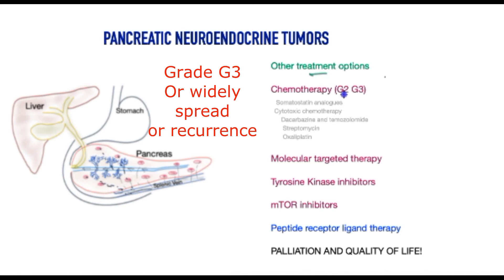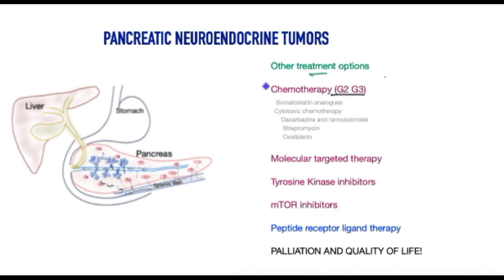For patients with highly malignant grade 3 tumours, other means of controlling the disease are required, such as chemotherapy. This is a highly complex and evolving field. These patients may benefit from a combination of treatments including chemotherapy, molecular targeted therapy, drugs that inhibit tyrosine kinase, and mTOR inhibitors. There is also peptide receptor radionuclide therapy, where molecules tagged with radioactivity fixate to the tumours and destroy them.